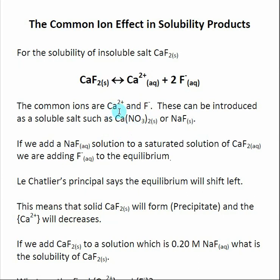If I wanted to add Ca²⁺ to an equilibrium, I would add calcium nitrate, for example. For F⁻, I would add sodium fluoride. Say I had a saturated solution — the maximum amount of Ca²⁺ and F⁻ in solution.